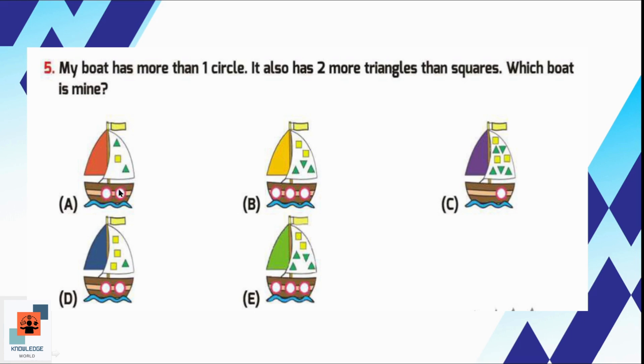We can see in the first board, there are 2 triangles, 1 square, and 2 circles. In second option, there are 3 triangles, 2 squares, and 3 circles. In option C, there are 5 triangles, 3 squares, and 1 circle. In option D, there are 3 squares, 1 triangle, and 2 circles. In the last option, there are 4 triangles, 2 squares, and 3 circles.